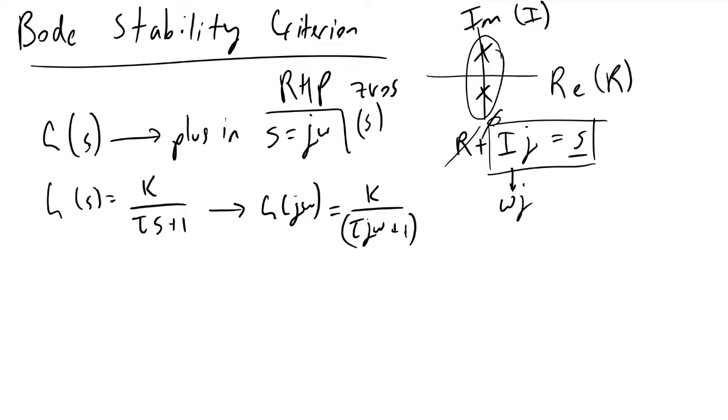The next step is to rationalize G of J omega. To do that, we multiply by the complex conjugate.